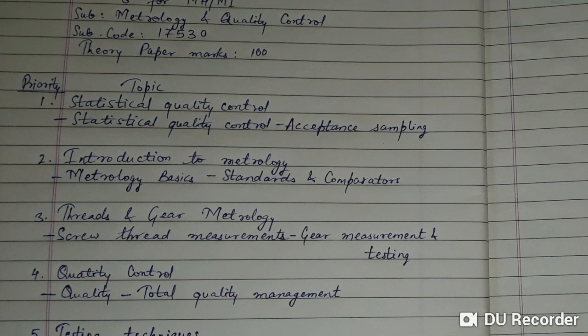The topics are: Priority 1 is Statistical Quality Control, with subtopics Statistical Quality Control and Acceptance Sampling. Priority 2 is Introduction to Metrology, with subtopics Metrology Basics, Standards, and Comparators. Priority 3 is Threads and Gear Metrology, with subtopics Screw Thread Measurements and Gear Measurement and Testing. Doing these 3 chapters can get you at least 50% marks or more.